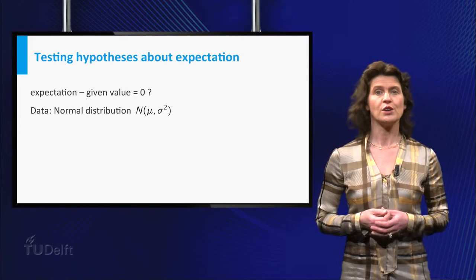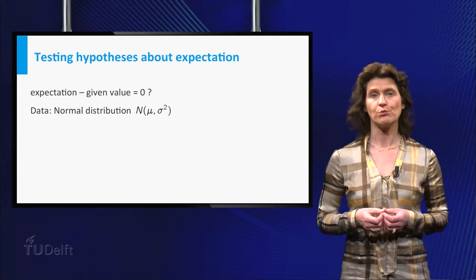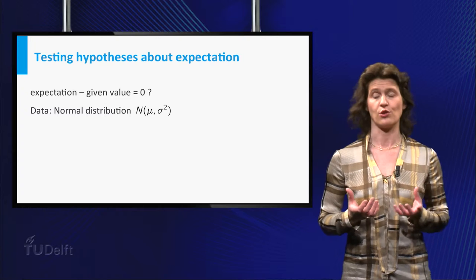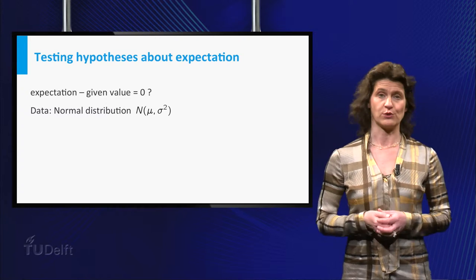In this video, we assume the data are from a normal distribution with both parameters mu and sigma squared unknown. In class we will generalize this.